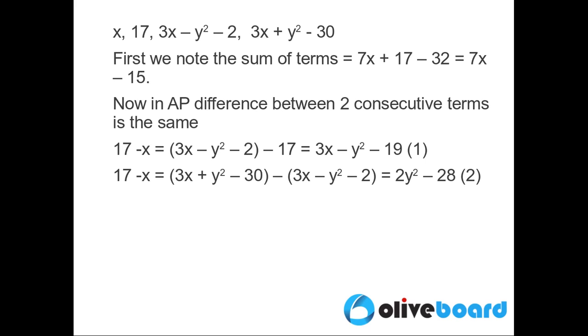Similarly, the difference between the second and first term should be equal to the difference between the fourth term and the third term, which is 3x + y² - 30 minus 3x - y² - 2, resulting in 2y² - 28.